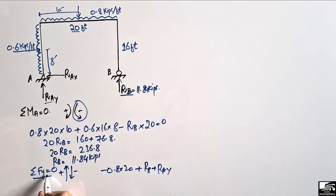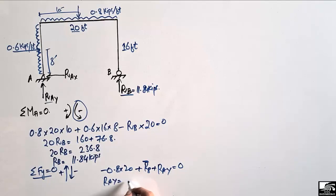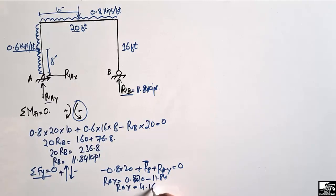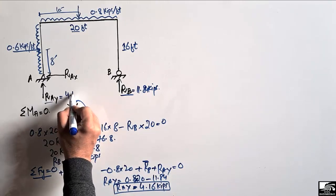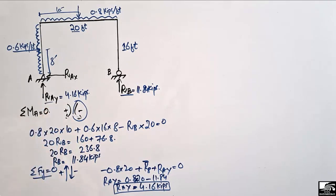We know RB is 11.84, so substituting: RAY equals 0.8 × 20 minus RB (11.84). RAY comes out to be 4.16 kips. This is the vertical resistance provided by the hinge support.